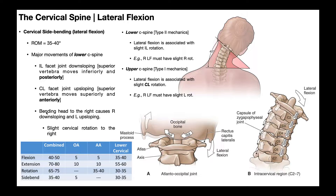We can make a general statement: if we bend the head to the right, it causes right down-sloping and left up-sloping. More generally, lateral flexion causes ipsilateral down-sloping and contralateral up-sloping. An important point about the lower cervical spine — C2-3 and below — is that when we laterally flex to the right, we also get a little bit of cervical rotation to the right. Lateral flexion and rotation really can't occur without each other.